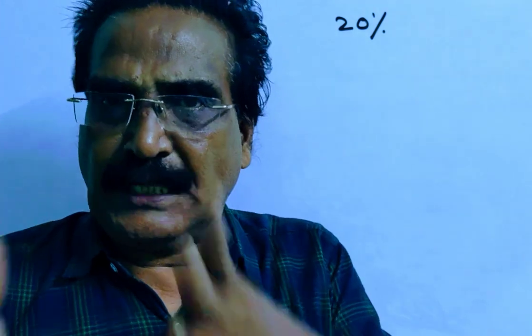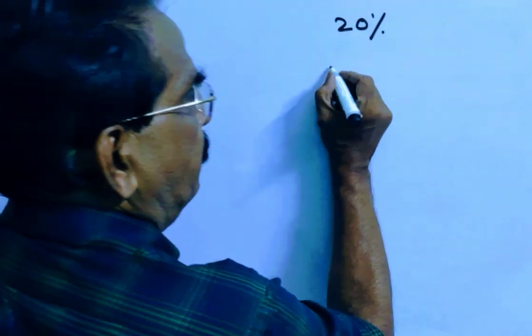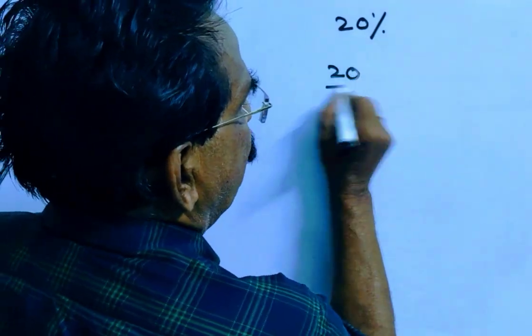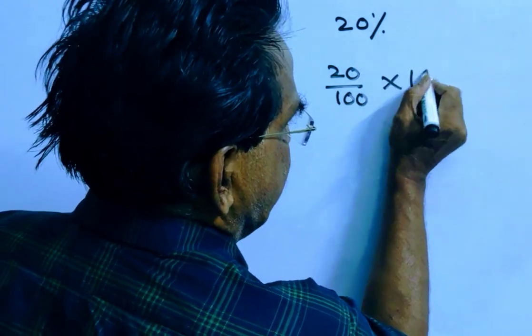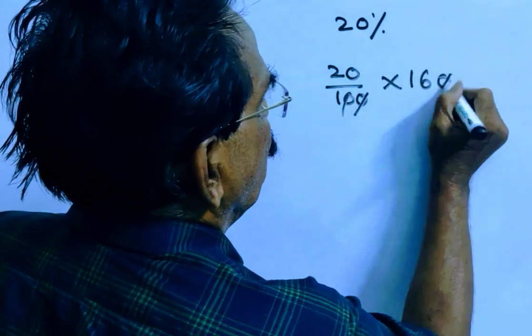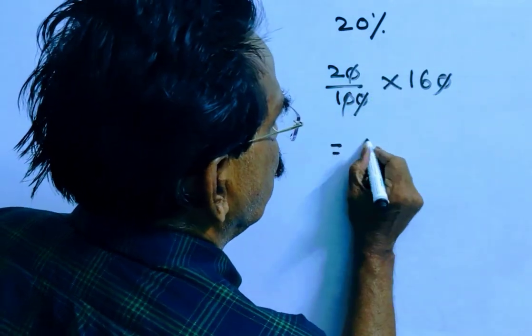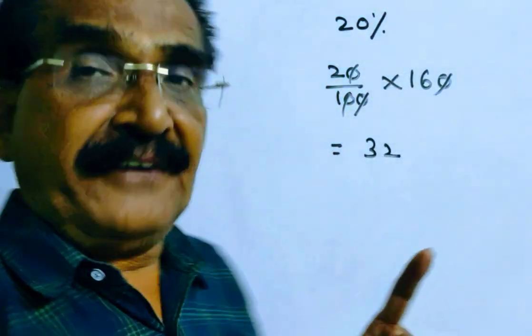The price is reduced by 20%. What is 20% of 160? That is equal to 32 rupees.